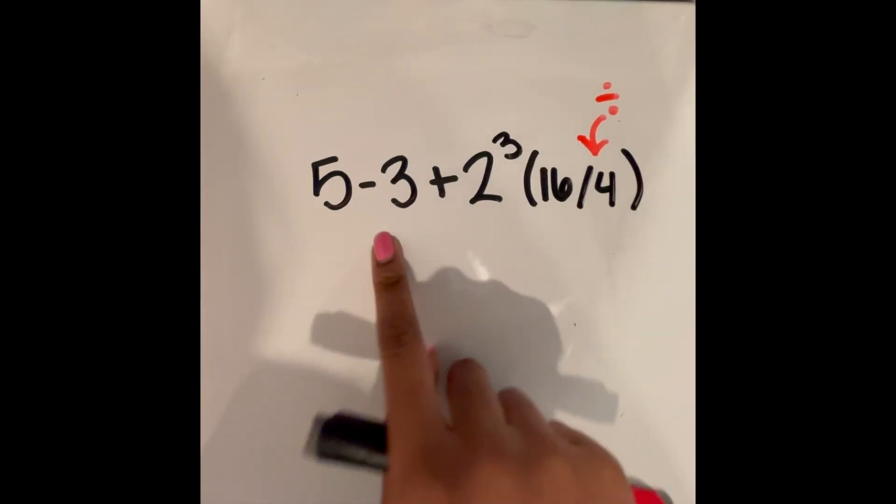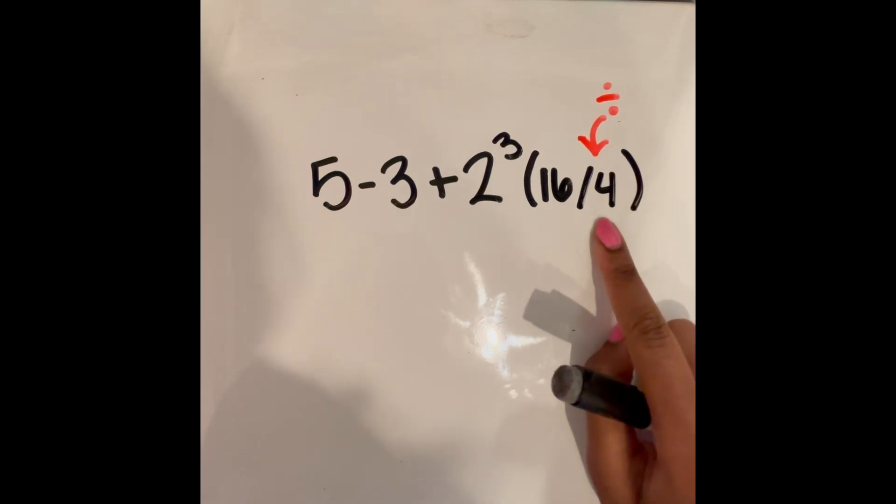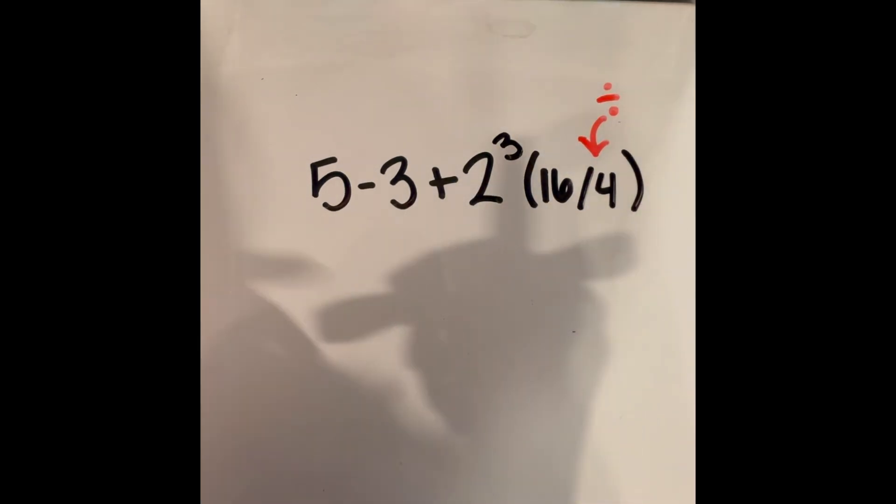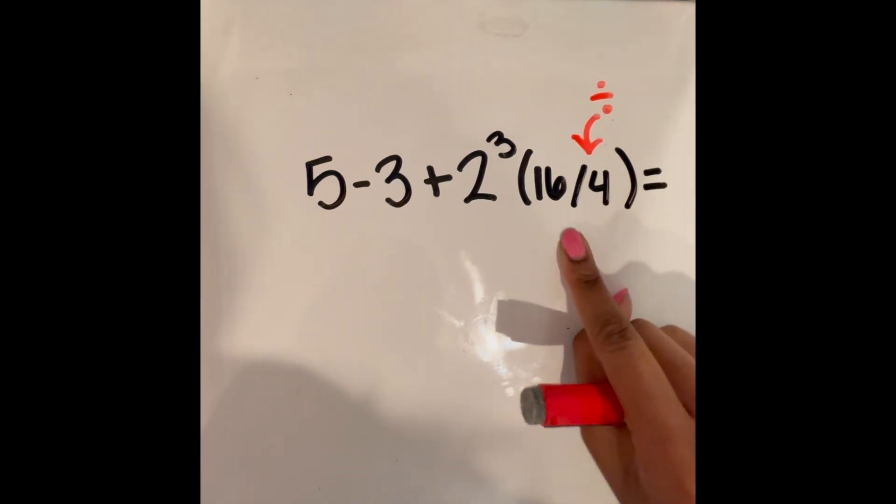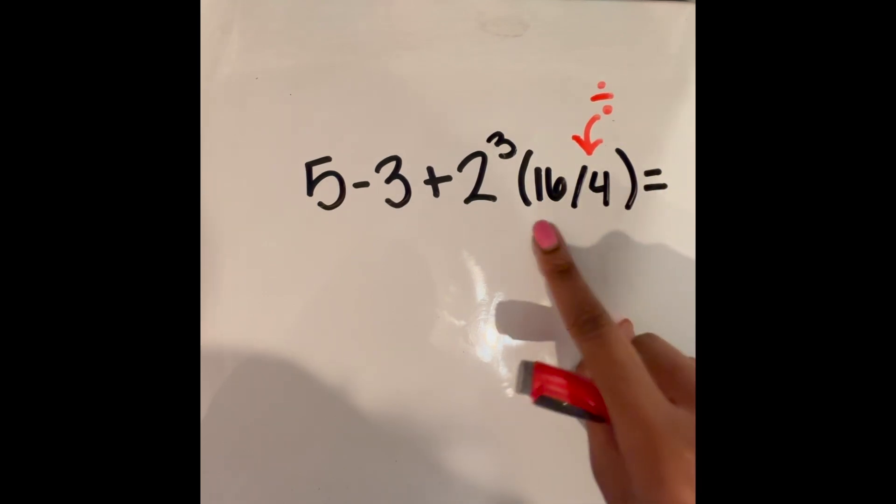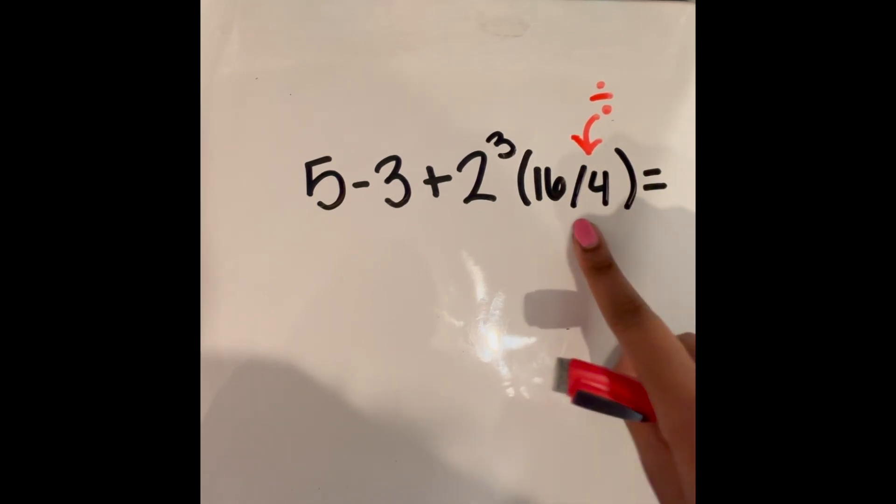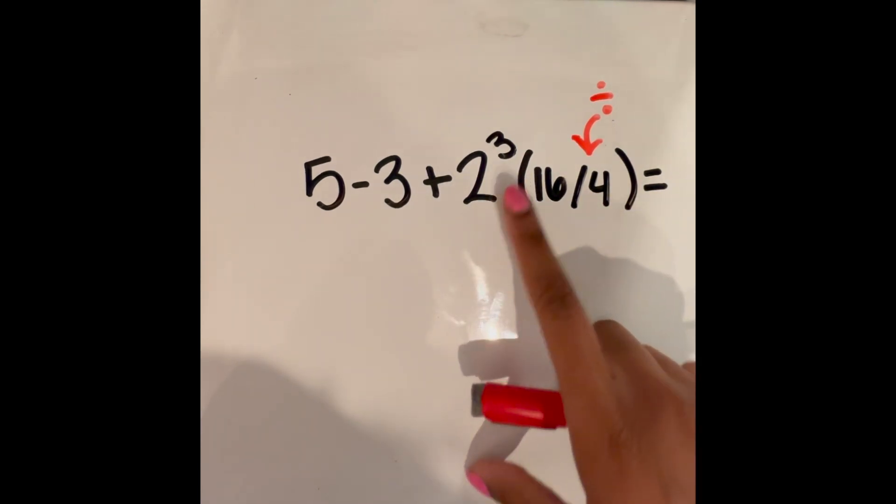We have 5 minus 3 plus 2 cubed times 16 divided by 4. So a couple things I want to mention before going in and solving this. With this dash symbol right here, this dash symbol represents a division sign. So this operation we're doing here is division. We're dividing 16 divided by 4.